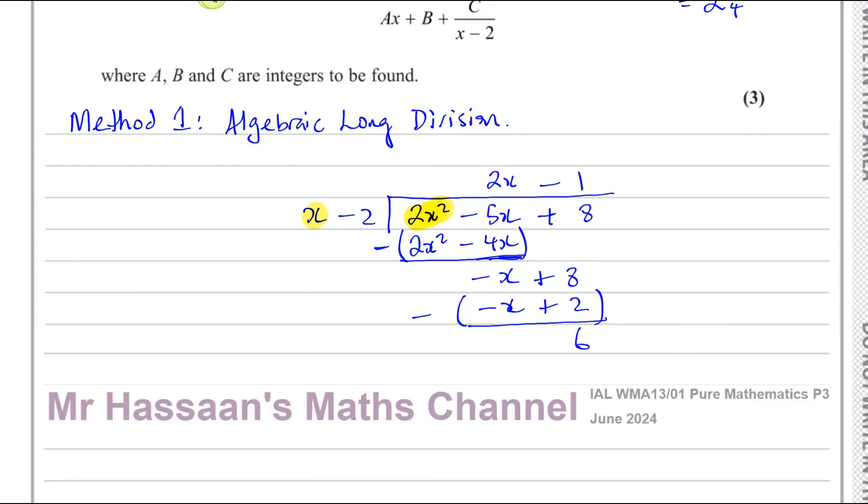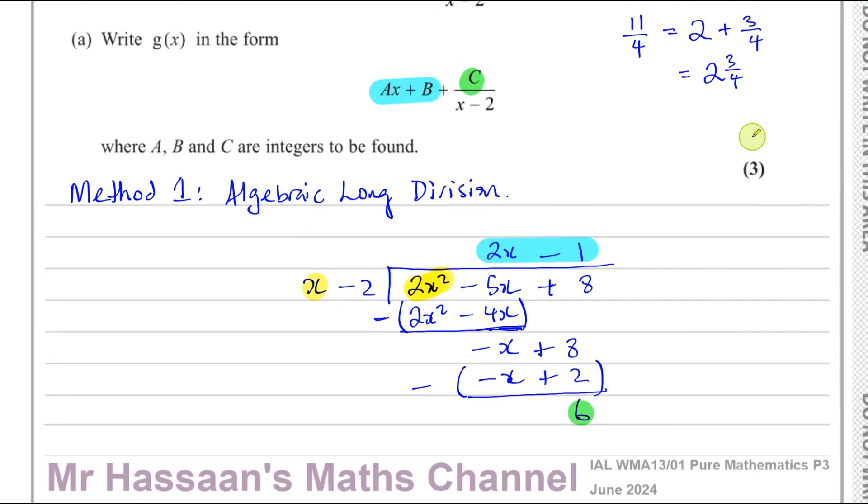So now, our quotient, our Ax plus B, is basically 2x minus 1. And our C is this 6, the remainder. Just like we had here. The 2 is how many times 4 goes into 11, and this is the remainder. When 4 goes into 11, it's 8. That's the quotient and that's the remainder. So we can say that g(x) is equal to the quotient 2x minus 1 plus the remainder 6 over x minus 2. So there is our answer.